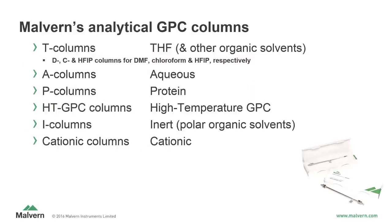To highlight the variety of solvents used as mobile phases, here are some of the types of GPC columns that Malvern offers. T columns for THF or other organic mobile phases such as DMF, chloroform, and hexafluoroisopropanol. A columns for the analysis of general aqueous polymers in a variety of aqueous mobile phases. P columns for the analysis of proteins in aqueous mobile phases. High temperature GPC columns for analysis at elevated temperatures. And specialty columns such as I columns, which contain an inert stationary phase that prevents sample adhesion, and cationic columns, which have a cationic stationary phase in order to repel cationic samples.